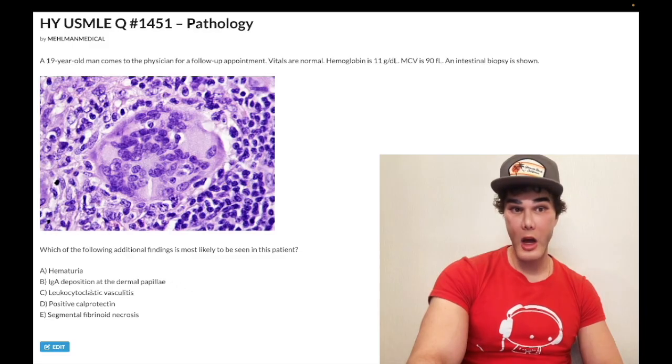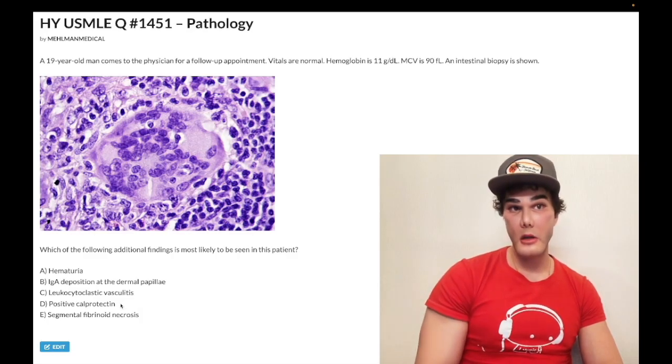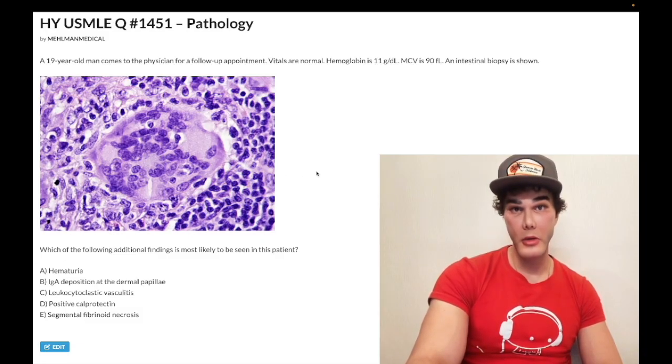Choice D, positive calprotectin, correct answer. Now, if you haven't heard of it before, you say, well, Mike, that sounds obscure. It's actually very high yield clinically. It can show up for USMLE. And you need to know this is secreted by neutrophils in the intestines in the setting of inflammation. And it has high sensitivity for IBD. Our diagnosis is Crohn disease. We have a non-caseating granuloma in the intestine here. Crohn disease.